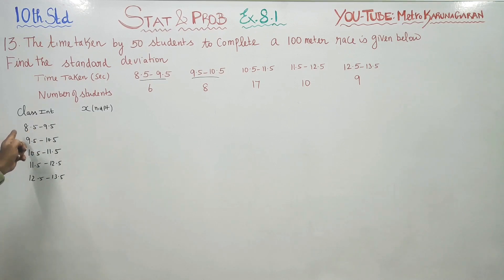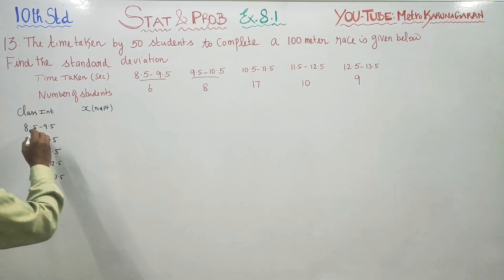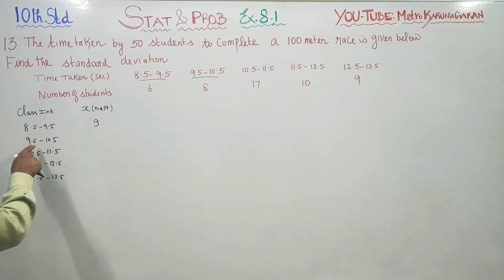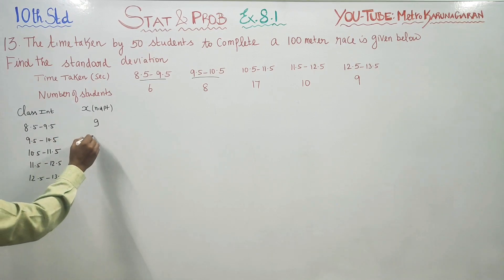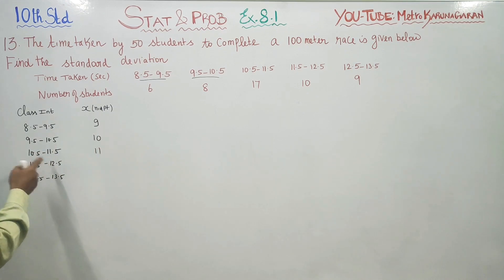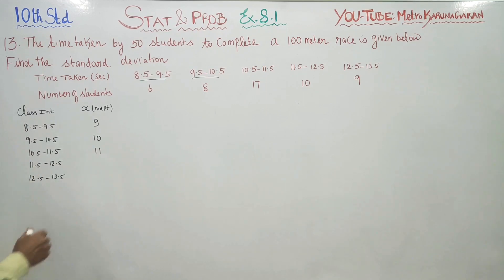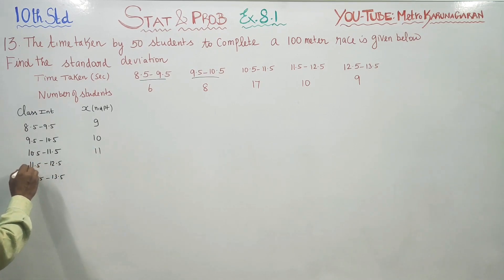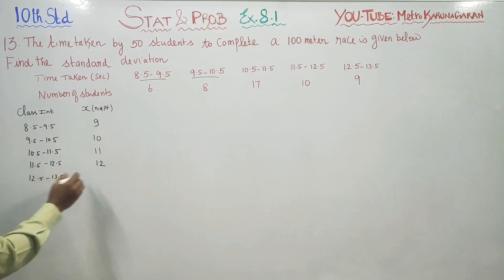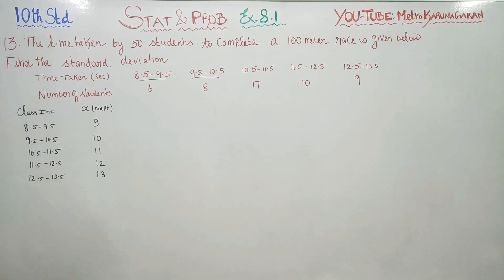For the first interval: 8.5 + 9.5 = 18, divided by 2 is 9. For 9.5 + 10.5 = 20, divided by 2 is 10. For 10.5 + 11.5 = 22, divided by 2 is 11. For 11.5 + 12.5 = 24, divided by 2 is 12. For 12.5 + 13.5, divided by 2 is 13. So my midpoints are 9, 10, 11, 12, 13.